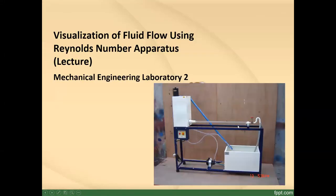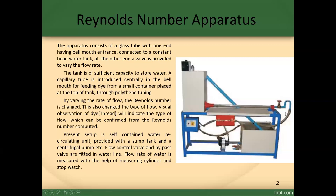This is the glass tube, this is the valve that varies the flow rate, and this is the tank. The tank is of sufficient capacity to store water. A capillary tube is introduced centrally in the bell mount for feeding dye from a small container placed at the top of the tank through a fine thin tubing.